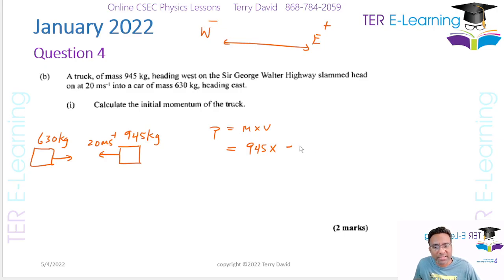So therefore, I'm going to use my velocity as minus 20. So that's going to be 945 multiplied by minus 20, and that's going to be minus 18,900, and this is kg ms to the minus 1. So that's my answer for that part. Even if you don't have the negative sign, you're going to still get the mark. That negative sign is going to come into play further on in the question.